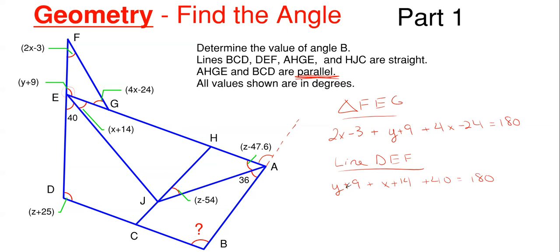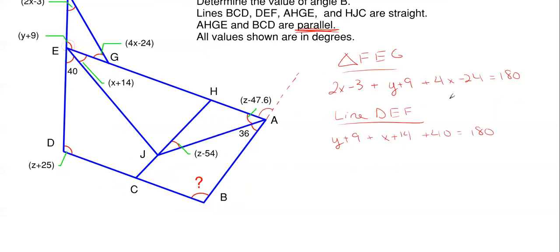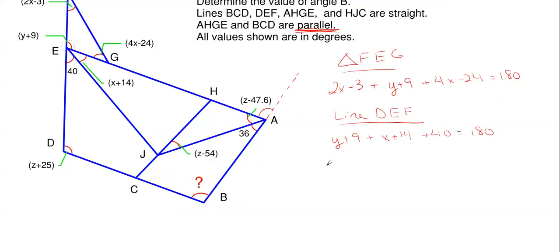Let's rearrange that second equation to solve for y in terms of x. Rearranging, we get y + x + 63 = 180, so y = 117 − x. We'll plug this expression for y into the triangle equation.